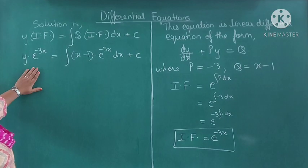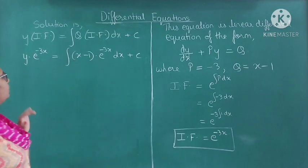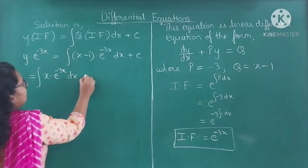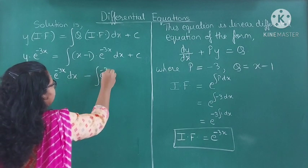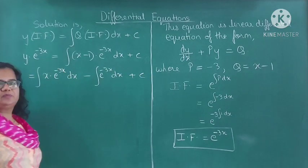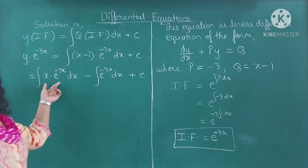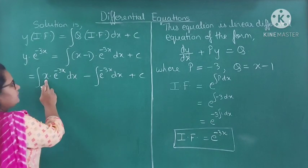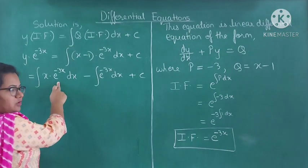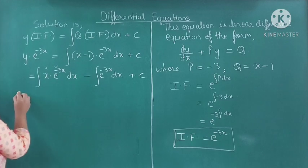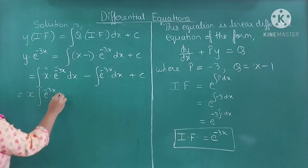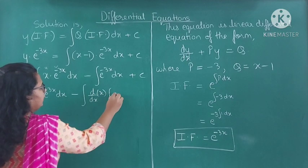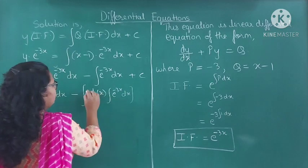We don't need to solve the LHS. We have to solve the RHS. First I will multiply: x into e raised to minus 3x dx minus 1 into e raised to minus 3x dx plus C. I have separated these two terms. Here you can see this is a product of two functions, so we have to use integration by parts. The first function is x — the algebraic function — and then the exponential function, according to the LIATE rule.